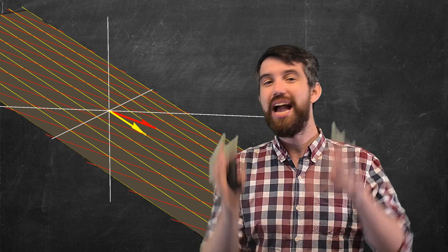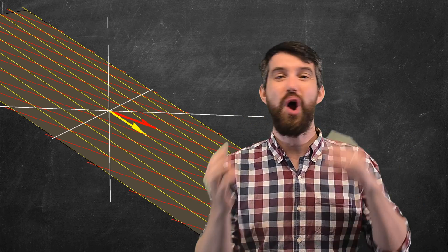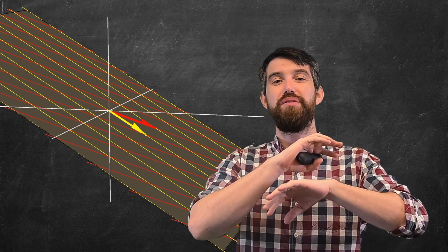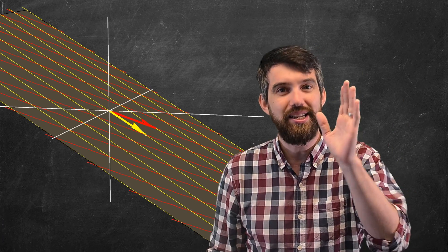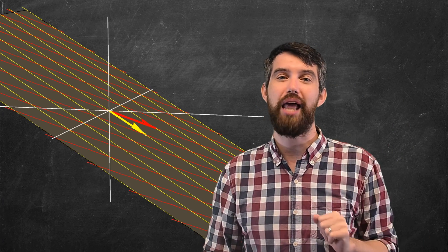So while the standard basis is really great if you're in R2 or R3, if you're in some sort of subspace, you can still have coordinate systems and grid lines — you just get to use any other basis.